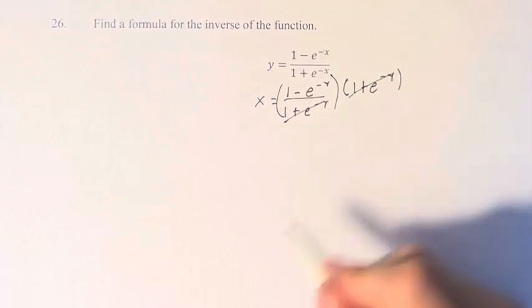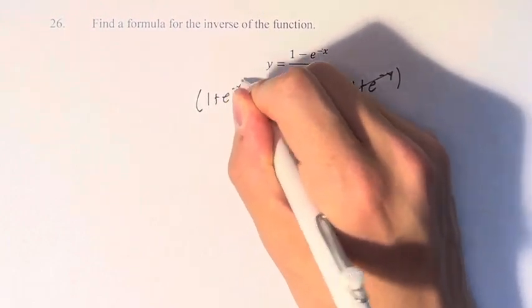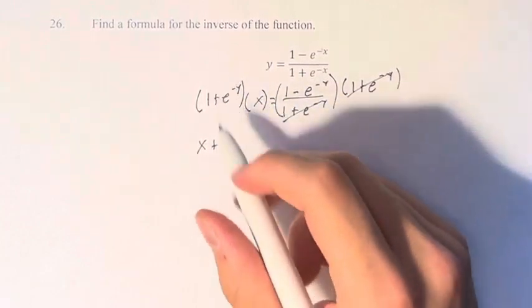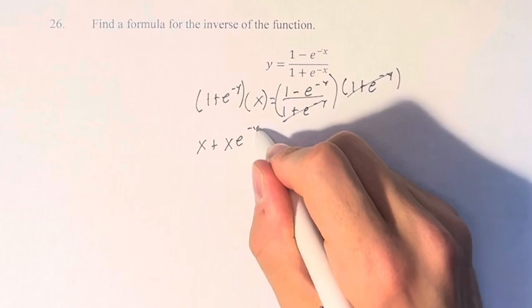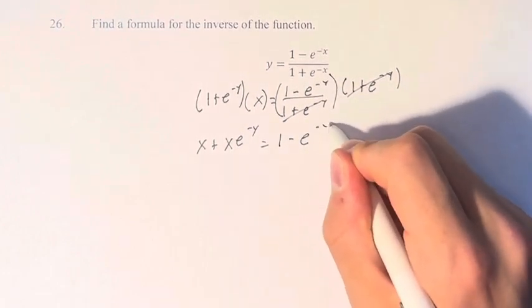So the first thing we do is multiply both sides by 1 plus e to the negative y. On this side, that just cancels out the denominator. And on this side, we get 1 times x is x plus x times e to the negative y. And this equals the numerator, which is all that's left, 1 minus e to the negative y.